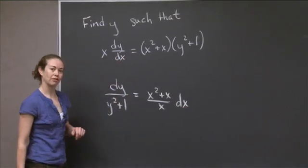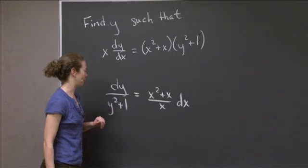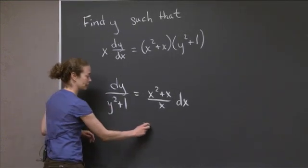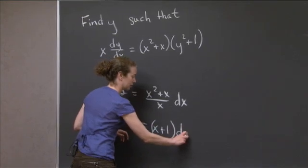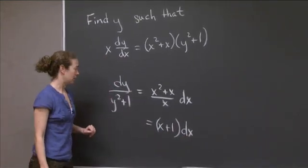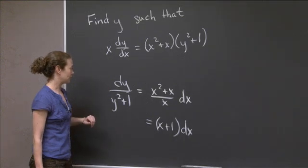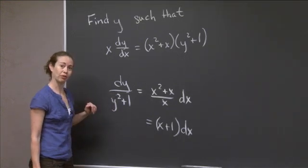Now, if x is 0 I have a little problem, but we're going to ignore that for the moment. So I can rewrite this as x plus 1 dx. And now I'm totally set up with my next step in separation of variables, so I can integrate both sides.